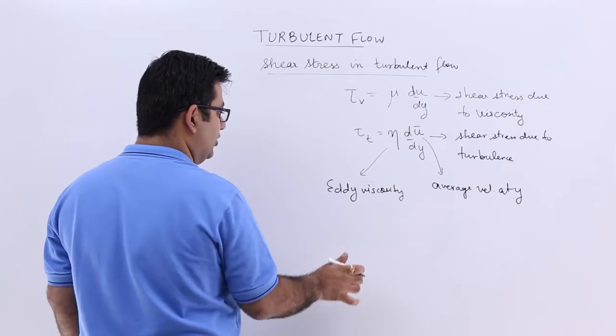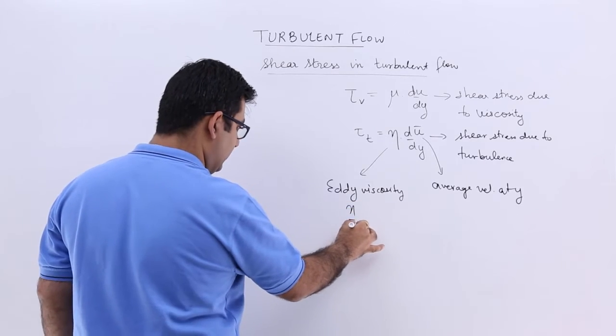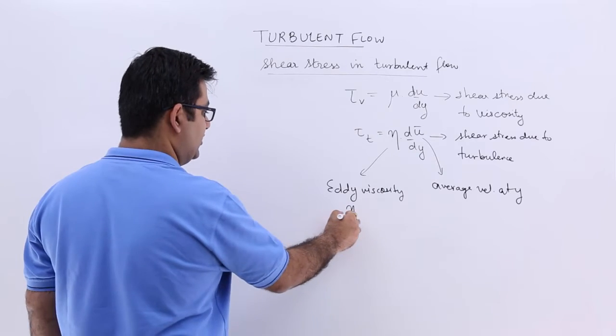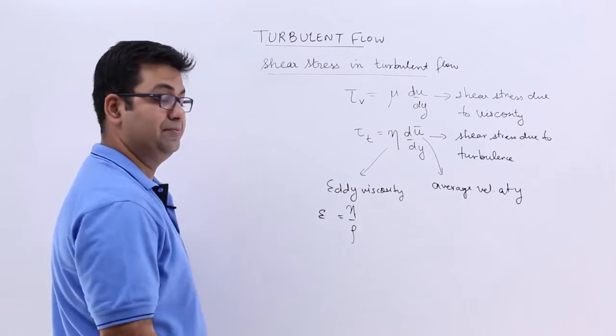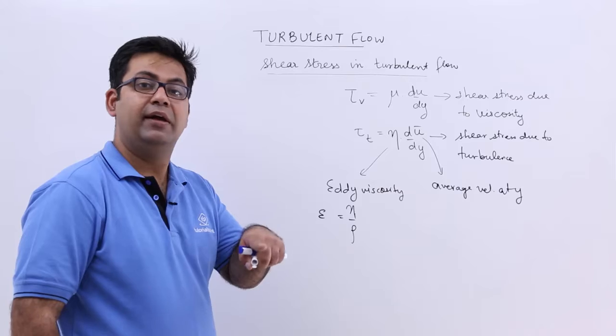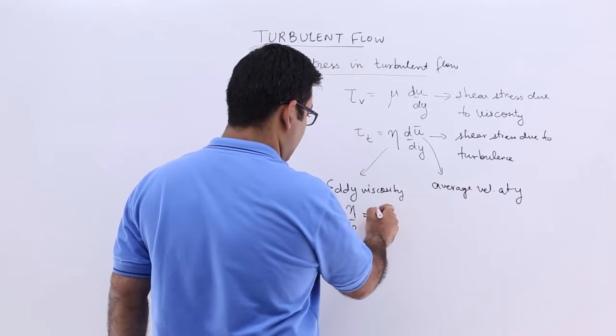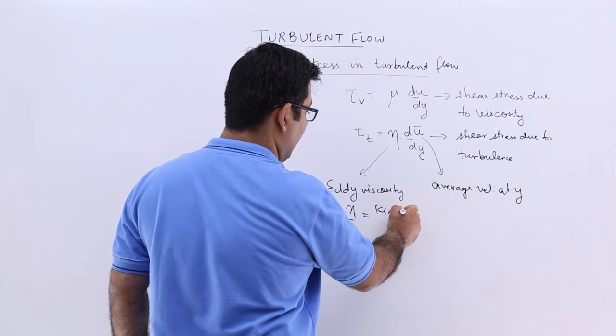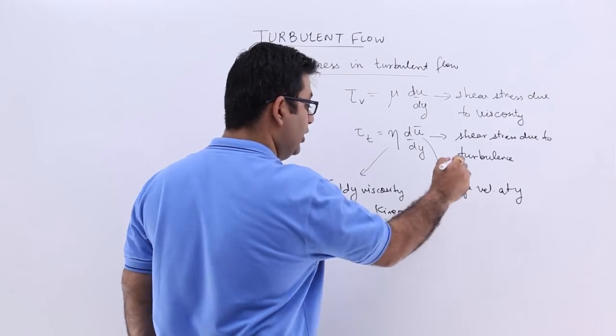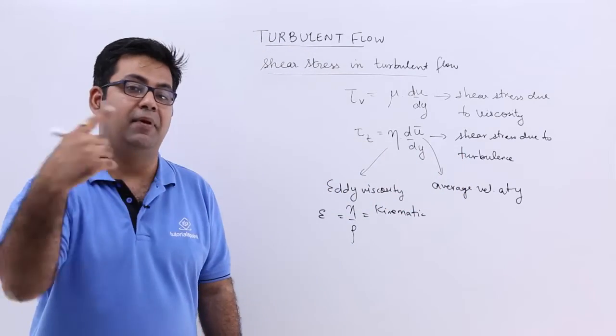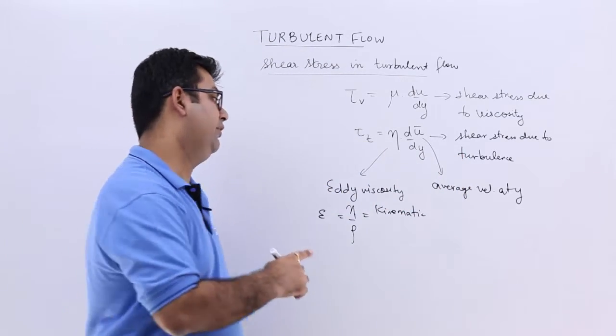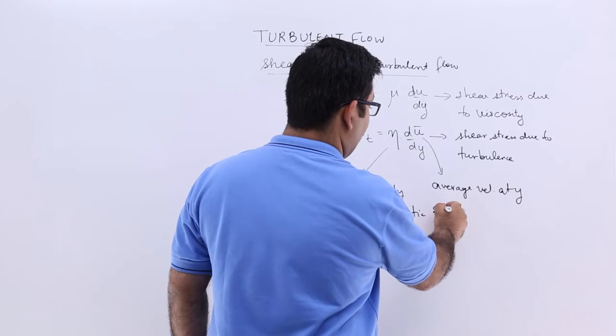Now this eddy viscosity, if you divide this by the density, is called epsilon. Epsilon is the kinematic eddy viscosity. It is exactly analogous to the dynamic viscosity and the kinematic viscosity. This is eddy viscosity.